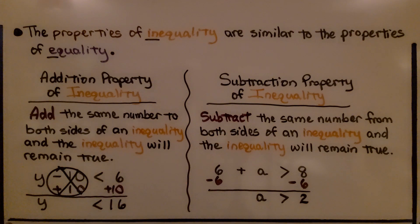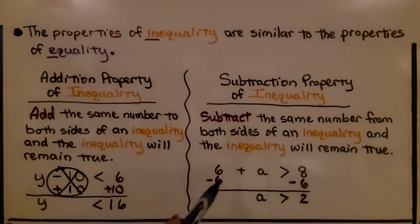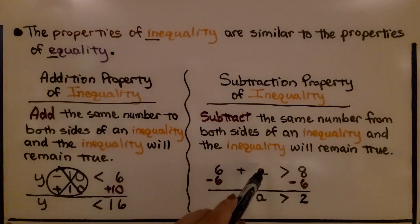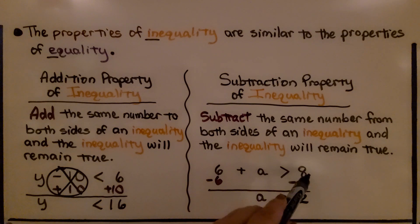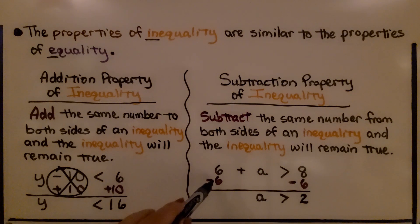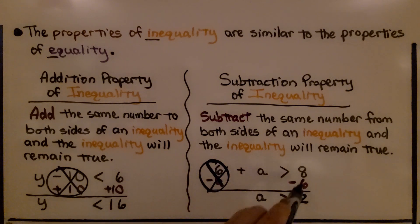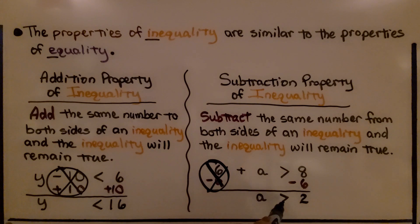The subtraction property of inequality says we can subtract the same number from both sides of an inequality, and the inequality will remain true. So if we have 6 plus a is greater than 8, we can take away 6 from each side. That'll eliminate the 6, and on the other side we'll have 2. We know that a is any number greater than 2.